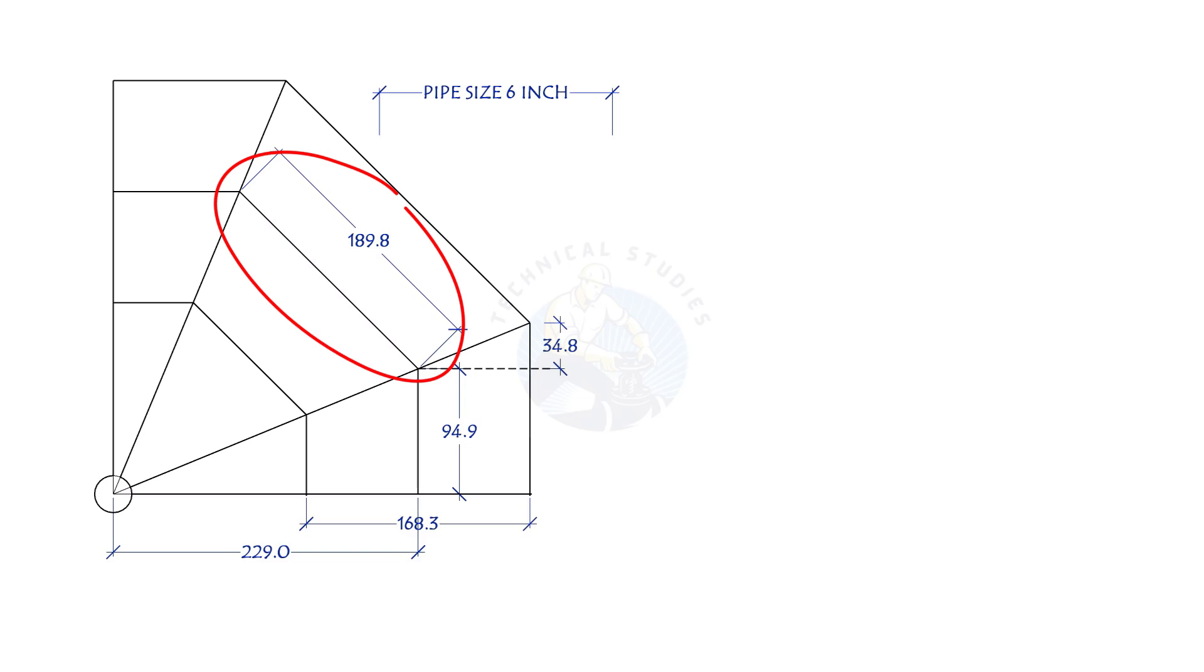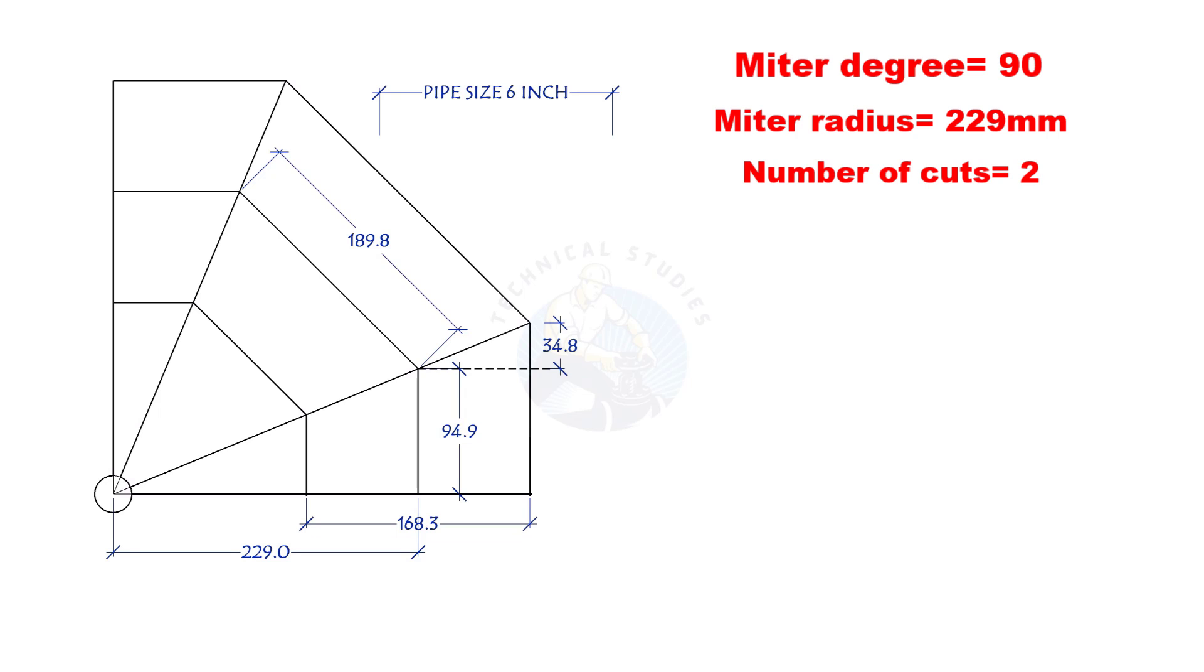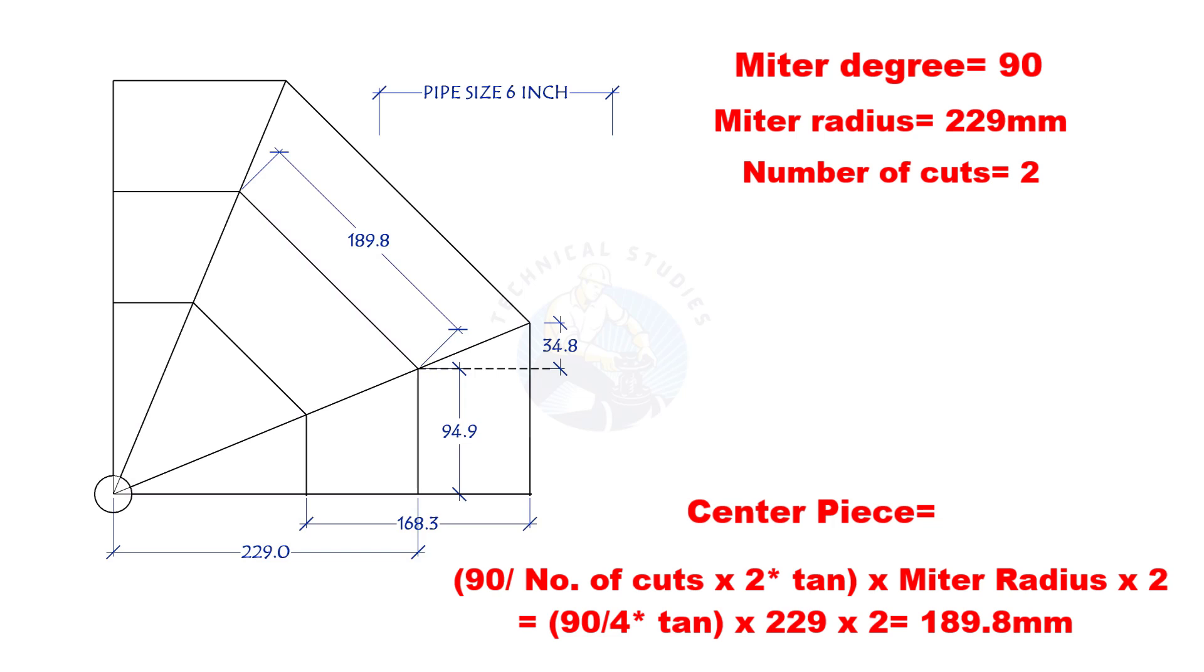Let us calculate the centerpiece length. To calculate the centerpiece length, we need to know mitre degree, center radius, and the number of cuts. 90-degree divided by number of cuts into 2 tan multiplied by the mitre radius into 2.